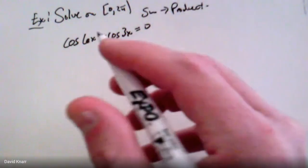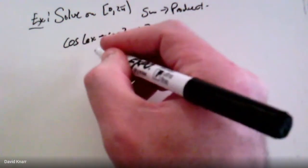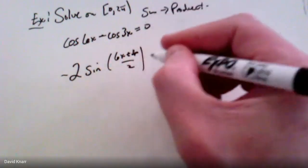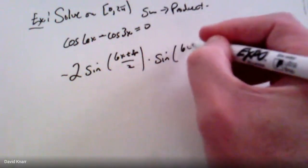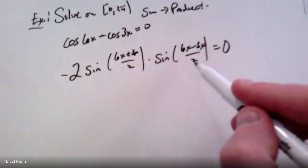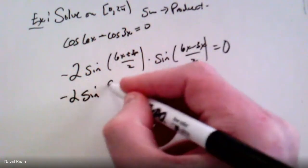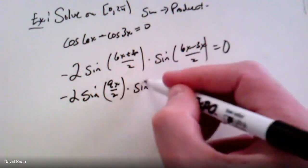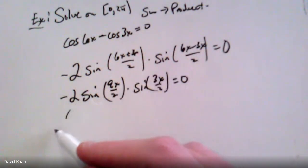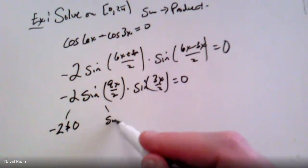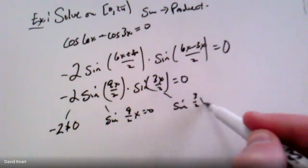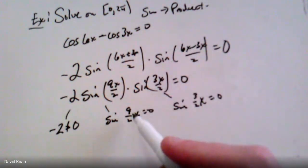Applying the cosine difference to product formula: cos(6x) − cos(3x) = −2·sin((6x + 3x)/2)·sin((6x − 3x)/2) = 0. This simplifies to −2·sin(9x/2)·sin(3x/2) = 0. Now we have a product equal to zero, so we set each factor equal to zero: sin(9x/2) = 0 or sin(3x/2) = 0.